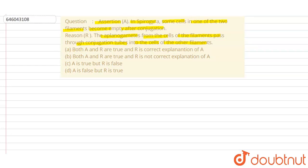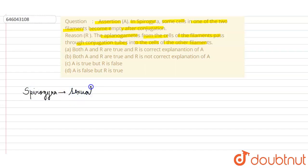You have to tell whether the assertion and reason are true or not, and whether the reason explains the assertion. When we talk about Spirogyra, the process of sexual reproduction basically occurs through conjugation.